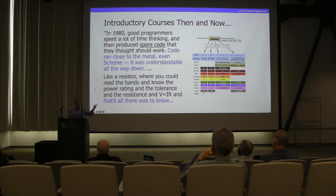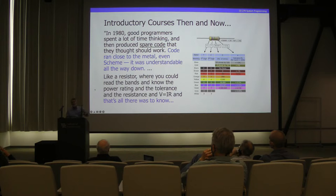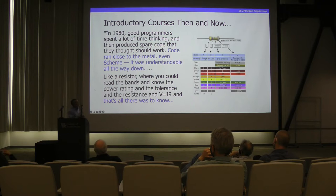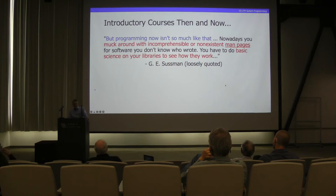Today I talked about page tables and how virtual addresses get translated into physical addresses. But in 1980, good programmers spent a lot of time thinking and produced spare code — code ran close to metal. Even Scheme, which was a functional language used to teach introductory programming at MIT — the very first language you learned was functional. It wasn't until week four or five that you learned you could even change the value of a variable.